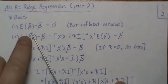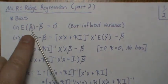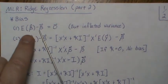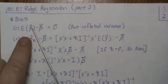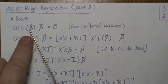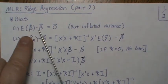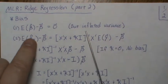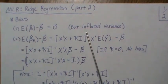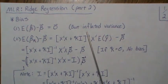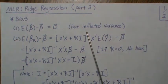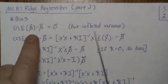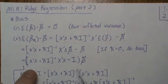In the least squares setting it's unbiased — we showed the expected value of the least squares estimator is equal to beta, so there's no bias. But in the multicollinearity setting, which is the reason you would use Ridge Regression, the variances are inflated with our estimates.